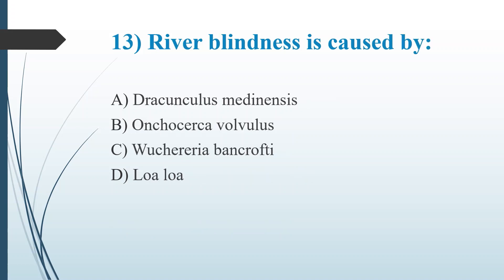Thirteenth question: River blindness is caused by — Option A: Dracunculus medinensis. Option B: Onchocerca volvulus. Option C: Wuchereria bancrofti. Option D: Loa loa. The answer is Option B, Onchocerca volvulus, which causes onchocerciasis, transmitted by black flies. Dracunculus medinensis is the Guinea worm. Wuchereria bancrofti causes elephantiasis. Loa loa causes loiasis, with symptoms including Calabar swelling — localized angioedema in the skin.